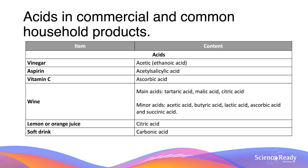Lemon or orange juice contains citric acid, because lemon and orange are both citrus fruits, which are characterized by having citric acid and a sour flavour. Soft drink, as discussed previously, contains carbonic acid, and the carbonic acid decomposition reaction in equilibrium is what causes the soft drink to go flat.